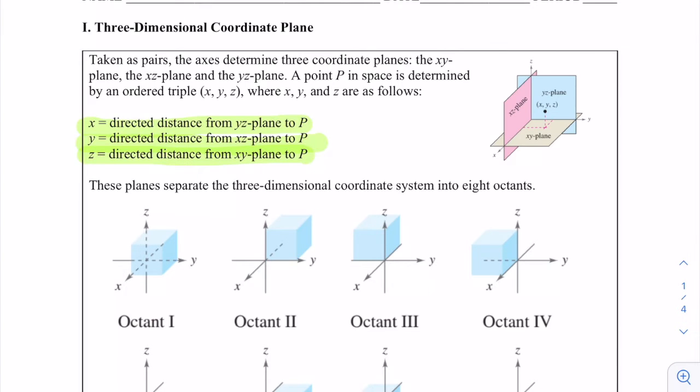The planes separate the three-dimensional coordinate system into eight octants. So you can see right here, octant one is all positive. When we go counterclockwise, we're able to get octant two, octant three, and octant four.